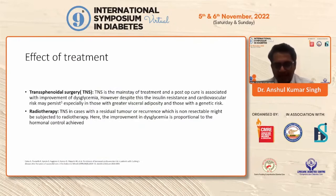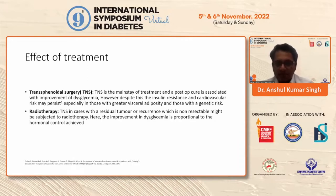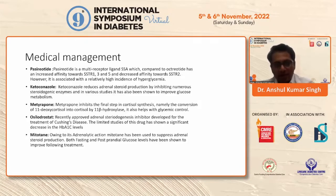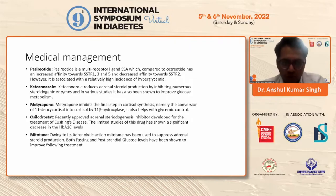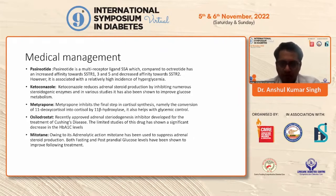For effective treatment of Cushing syndrome: the first line is transsphenoidal surgery, and radiotherapy also features prominently. Along with the decrease in cortisol levels, the glycemic profile also improves. For medical management, barring pasireotide — which worsens hyperglycemia — all other medications including ketoconazole, metyrapone, osilodrostat (a recent addition), and mitotane lead to decreased cortisol levels and thus improvement in glycemic profile.